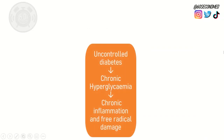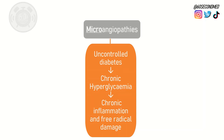Long-standing uncontrolled diabetes can lead to chronic hyperglycemia. This elevated blood sugar level can lead to chronic inflammation and free radical damage which affects blood vessels throughout the body. Some of these diseases can be classed as microangiopathies, whereby the fine capillary beds in the body are affected by this inflammation.